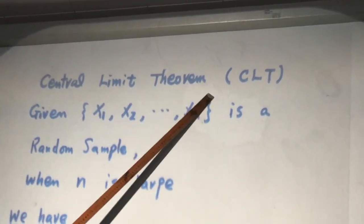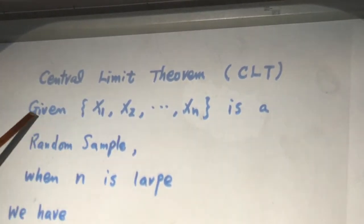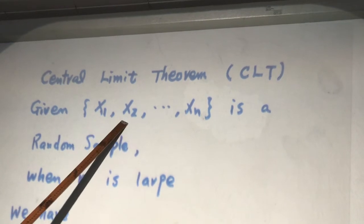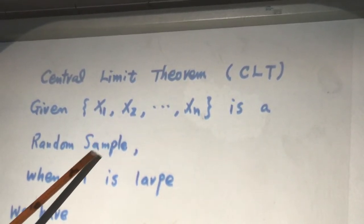Central Limit Theorem, CLT. So what is the given information? I say if I tell you X1, X2 up to Xn is a simple random sample.